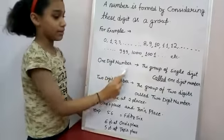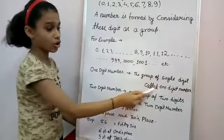One digit number: the group of single digit called one digit number.